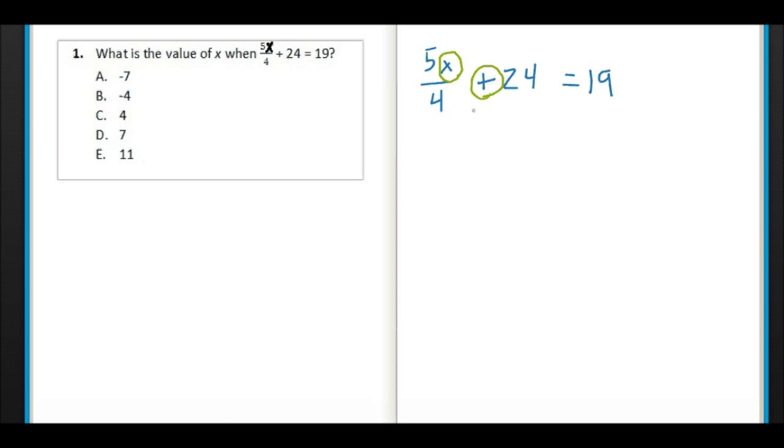You just notice it's been added here, so we do the opposite of that and subtract. If 5X plus 4 was being multiplied by 24, we'd do the opposite and divide. You do the opposite of what's already there if you want to solve the problem. So let's solve it.